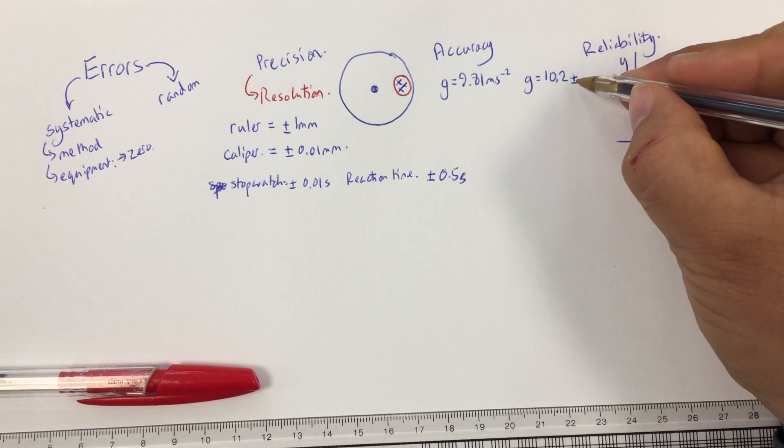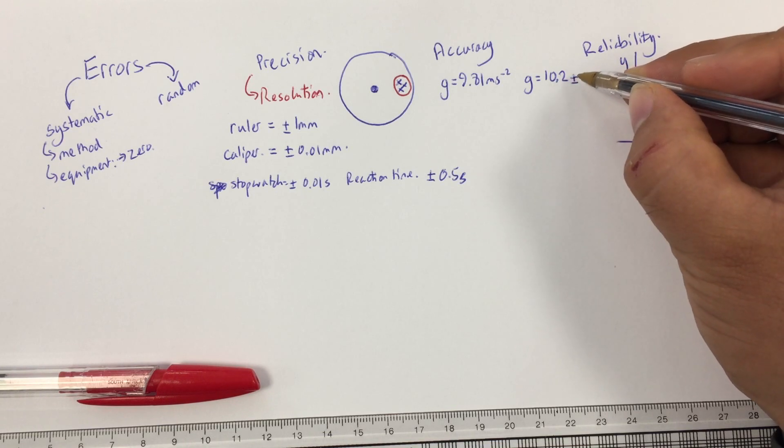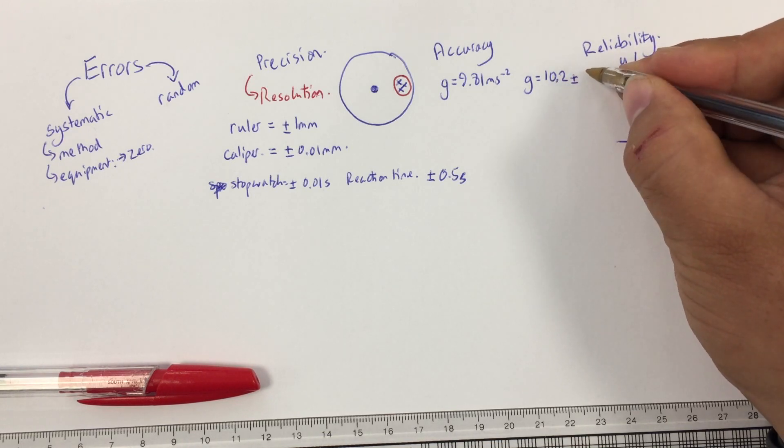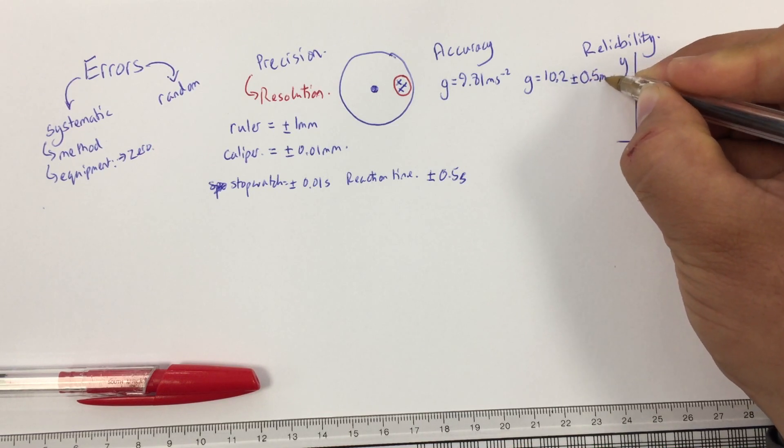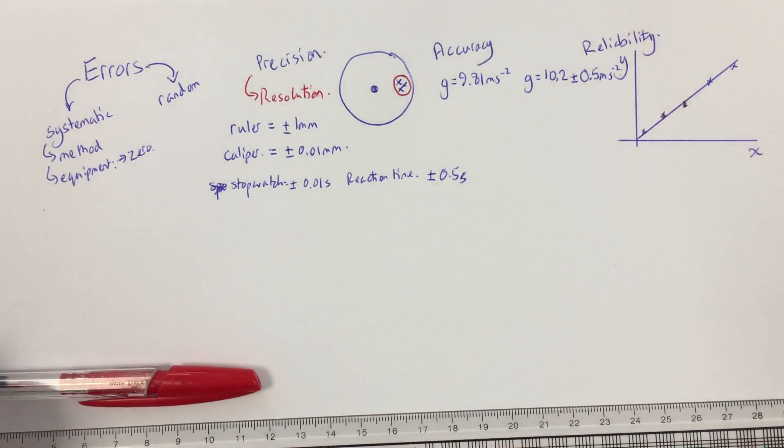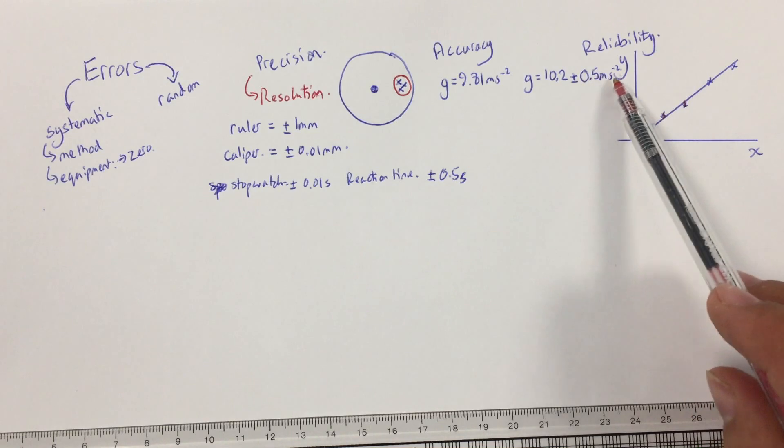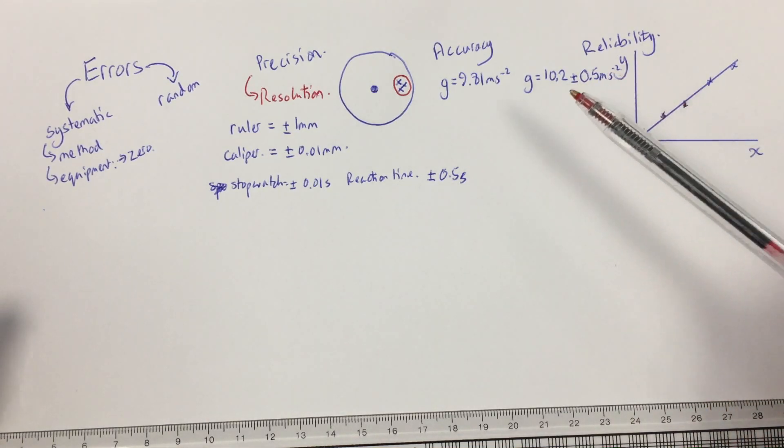So, absolute uncertainty is how much above or below this value we are uncertain about our results. So, let's just say, for argument's sake, that I am plus or minus 0.5 meters seconds to the minus 2. That's my absolute uncertainty. Now, what I use this absolute uncertainty for is I can work out my percentage uncertainty, and I can also work out my percentage difference. So, let's just have a look at how we would do that.